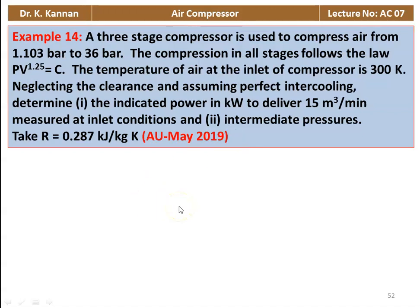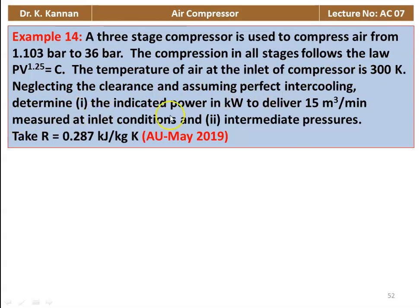Example number 14 from May 2019. A three-stage compressor compresses air from 1.013 bar to 36 bar. Compression in all stages follows PV^1.25 = constant. Inlet temperature is 300 K. Neglecting clearance and assuming perfect intercooling, determine the indicated power in kilowatts to deliver 15 m³/min measured at inlet conditions, and the intermediate pressures. Take R = 0.287 kJ/kg·K.